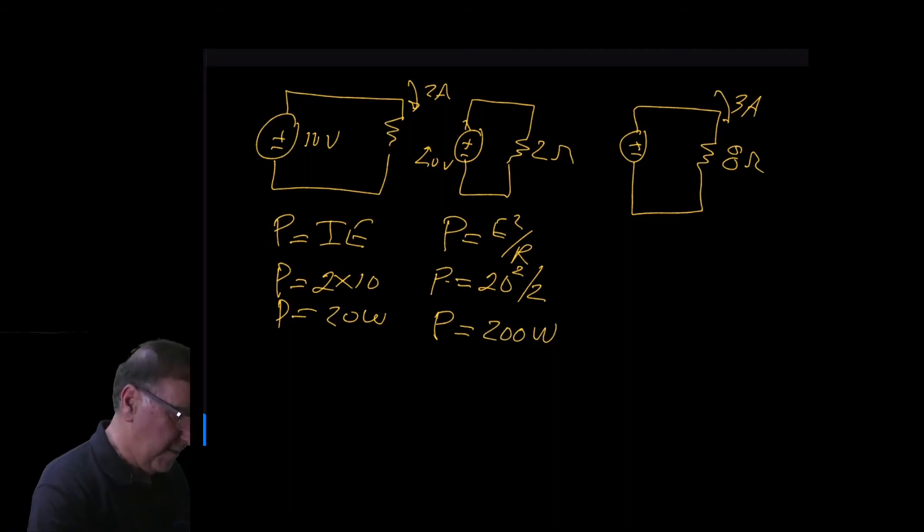In the last example here, we have an 8 ohm resistor and 3 amps of current in the circuit. We have power equal to I squared R. Power equals 3 squared times 8. Power equals 72 watts.